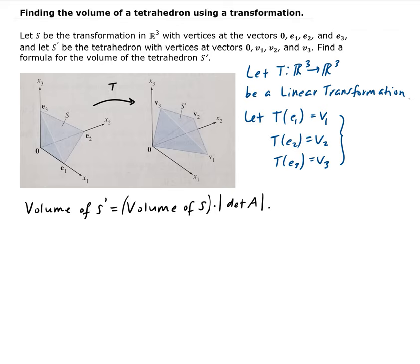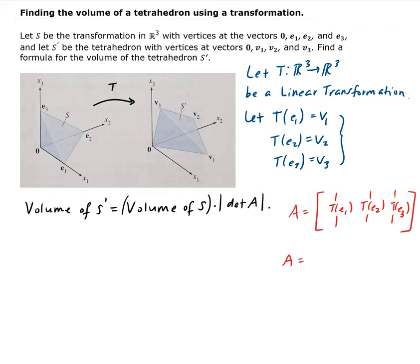So matrix A is composed of the transformation of e1, e2, and e3 as its columns. Based on our assumptions, the transformation of e1 goes to v1, the transformation of e2 goes to v2, and the transformation of e3 goes to v3. So A has columns v1, v2, and v3.